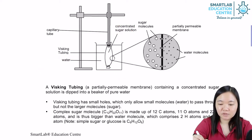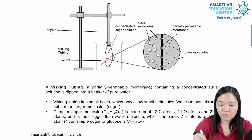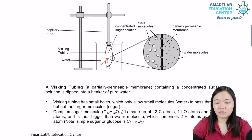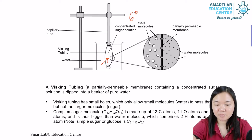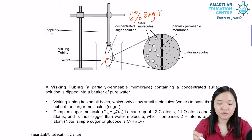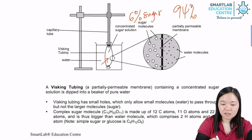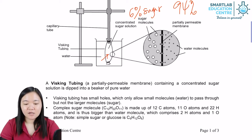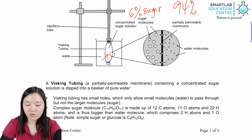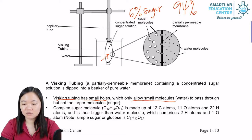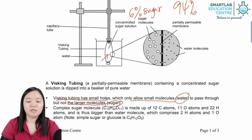So the movement of water occurs from higher water potential to lower water potential. Although the sugar concentration is six percent, it doesn't mean sugar will move — water will move in, because the water potential is 94. Visking tubing has small holes; it only allows small molecules to pass through, but not larger ones like sugar.